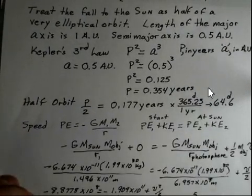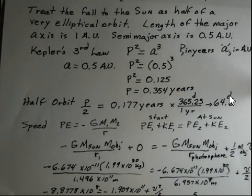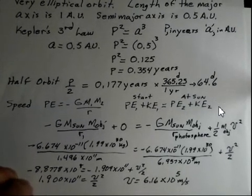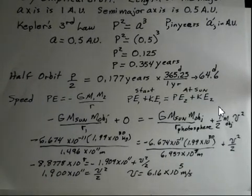But approximately, you know, ballpark number, 2 months for this object to get to the sun. And using conservation of energy, we calculated the speed when it hits the photosphere, 6.16 × 10⁵ meters per second.